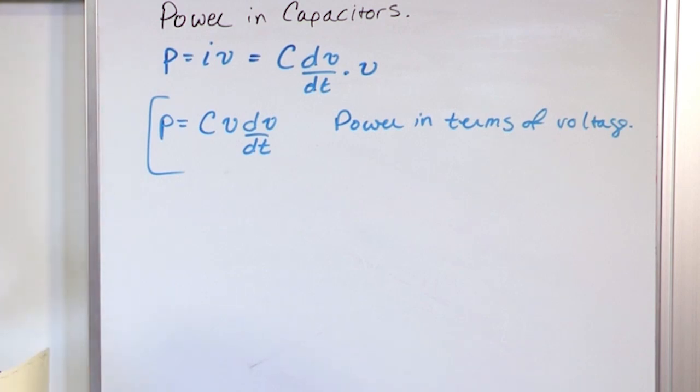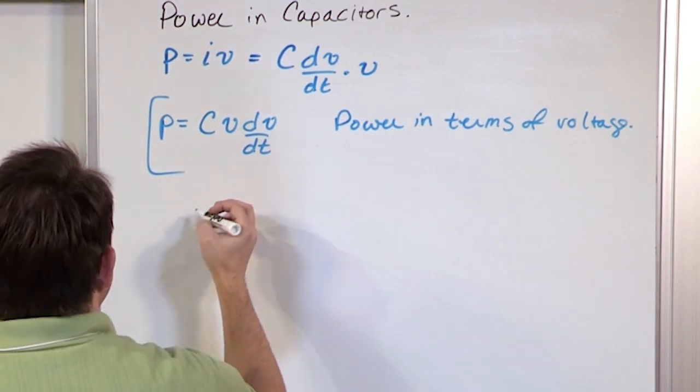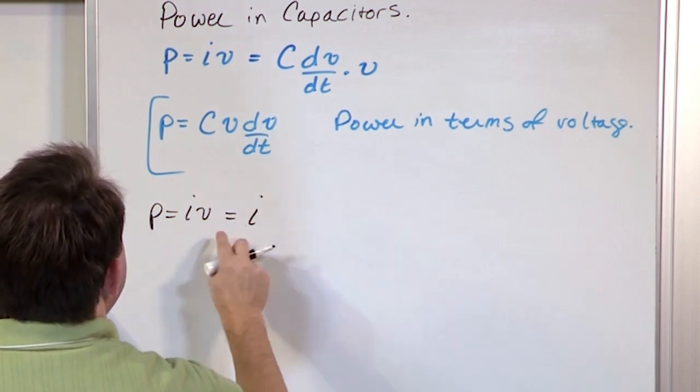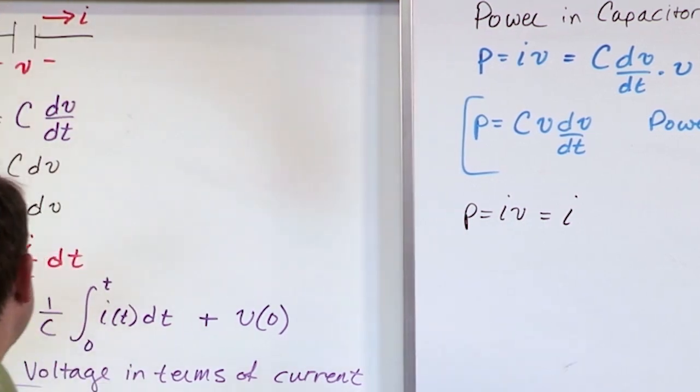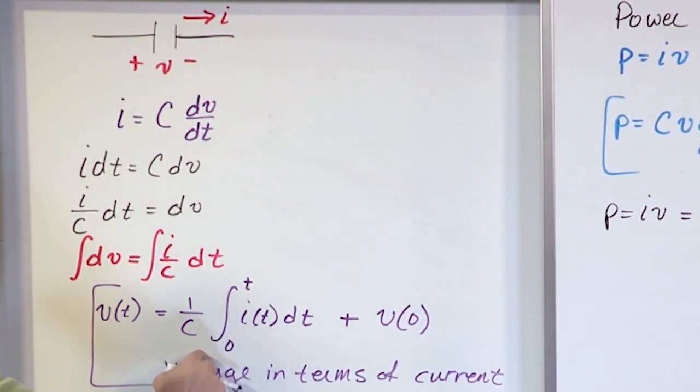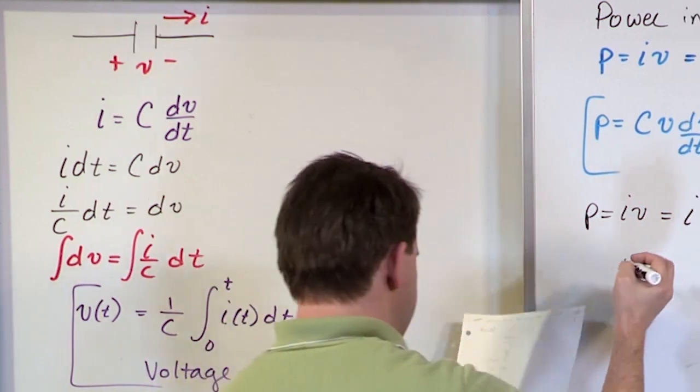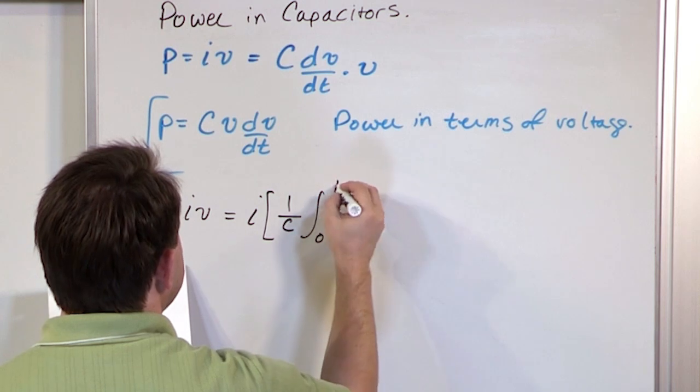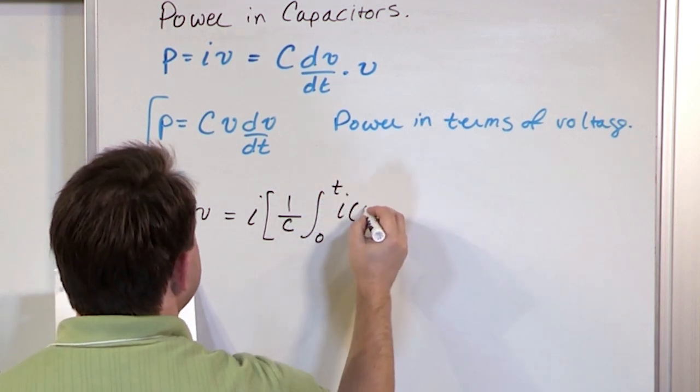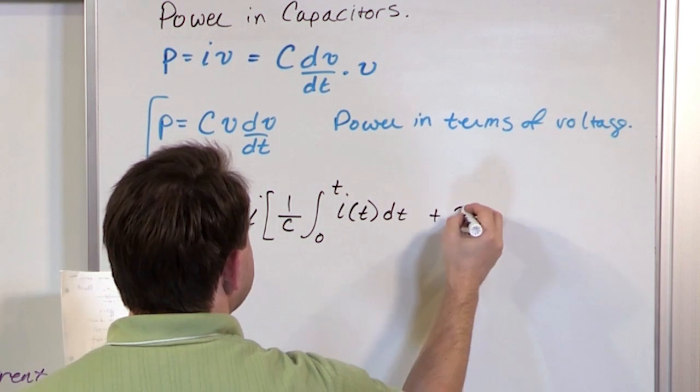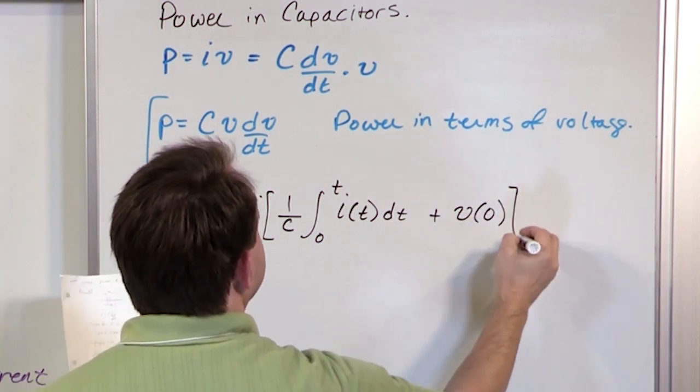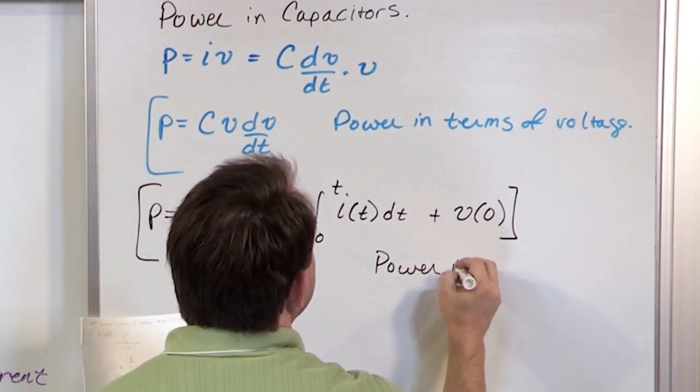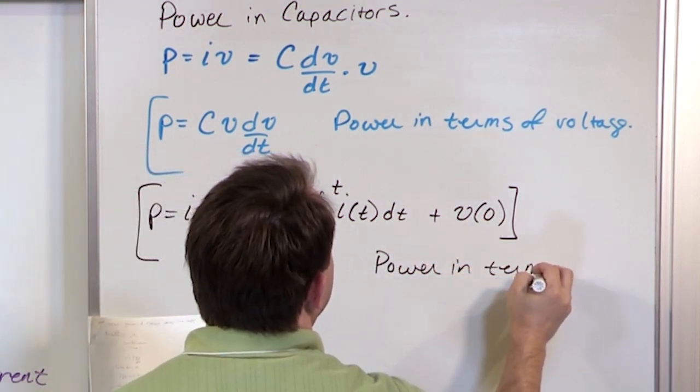Let's turn it around and go the other way. Let's say P equals IV. But now we know what this voltage is. We already found what the voltage is across the capacitor is equal to this guy. So it's I times one over C integral zero to T, I of T, dT, plus the initial voltage. All right. So this is the power in terms of current.